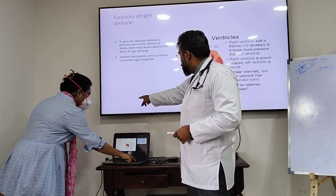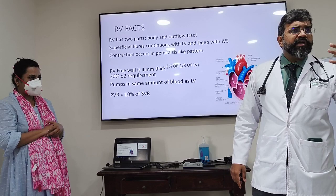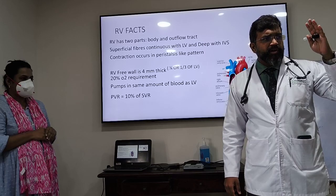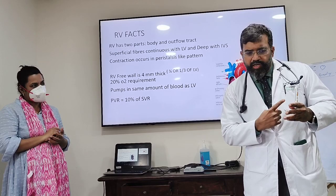Another very important point: the pulmonary vascular resistance is 10% of SVR. This means the RV is pumping against almost no resistance. That is why for a long time the thinking was that it is just a conduit — just a passage for blood to come from the right atrium, pass through, and get into the lungs.